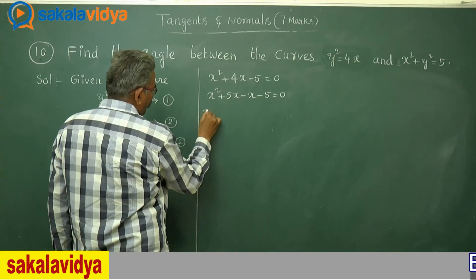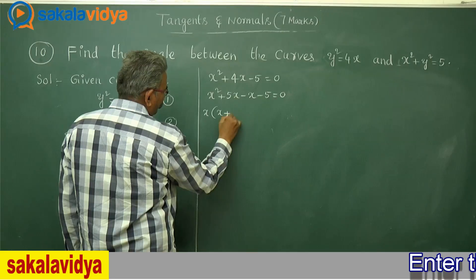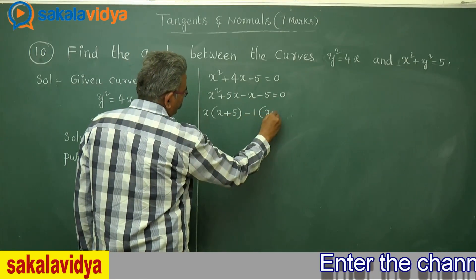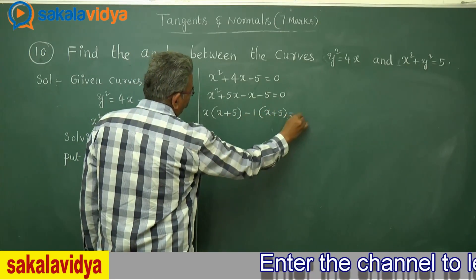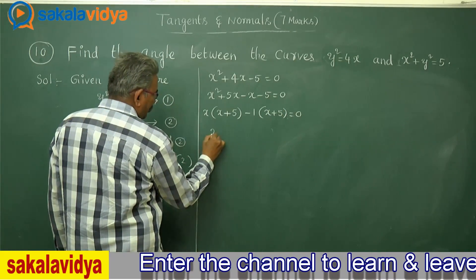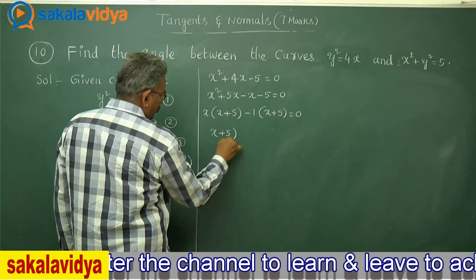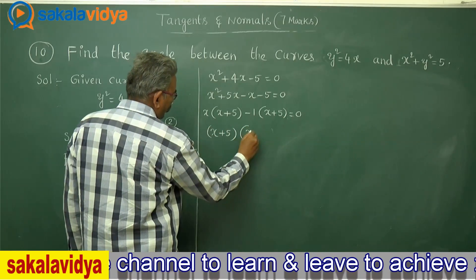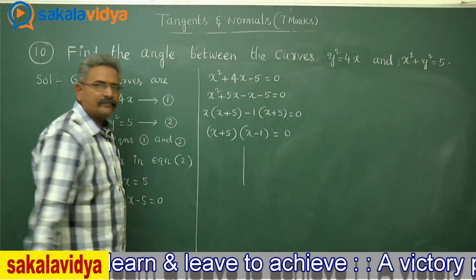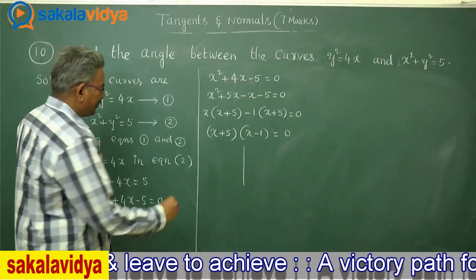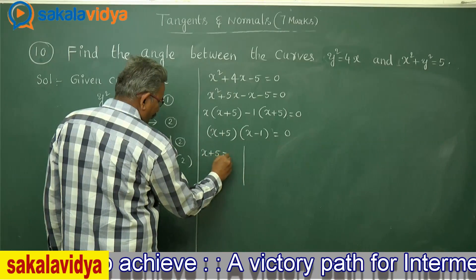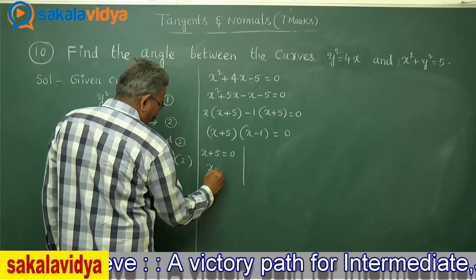Taking x common: x(x + 5) − 1(x + 5) = 0. Now taking (x + 5) common, we get (x + 5)(x − 1) = 0. This gives two cases: x + 5 = 0, so x = −5, and x − 1 = 0, so x = 1.